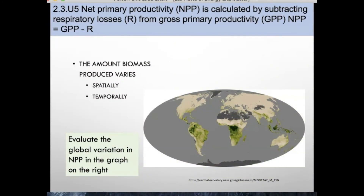Not all biomass is created equally. In terrestrial ecosystems, temperature, water availability, and solar radiation influence the rate of primary productivity. In aquatic systems, water is not the limiting factor — temperature varies less in the ocean than on land because water has a high specific heat capacity. A major limiting factor in aquatic systems is light. The amount of biomass produced can vary spatially or temporally. Pause at this point and look at the graph on the right and evaluate the global variation in net primary productivity.